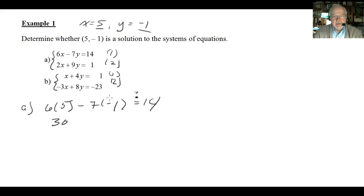And of course, the question is, does the left-hand side equal the right-hand side? All right, 30. We have a minus times minus, so that's going to be a plus. 7 times 1 is 7.